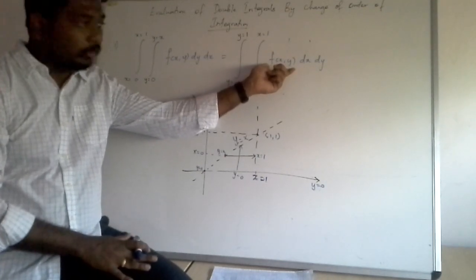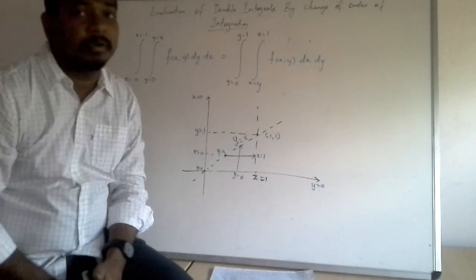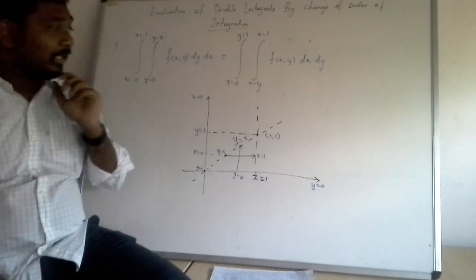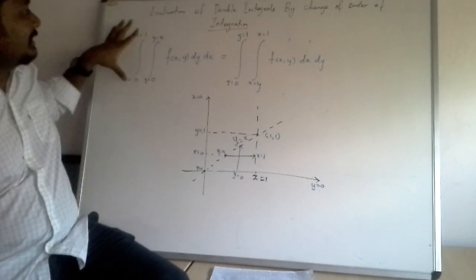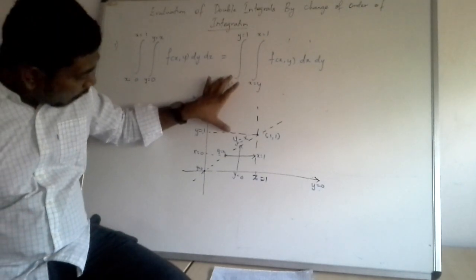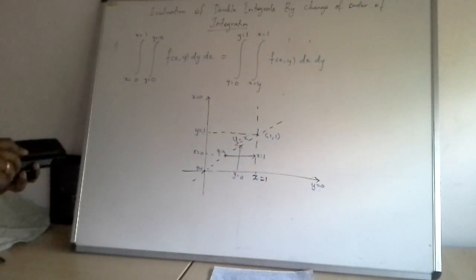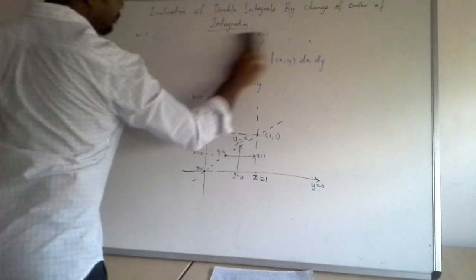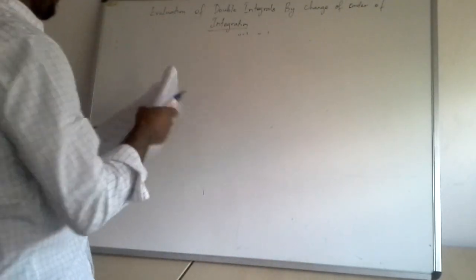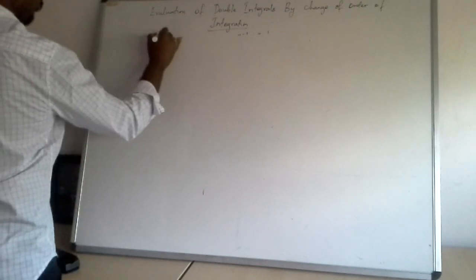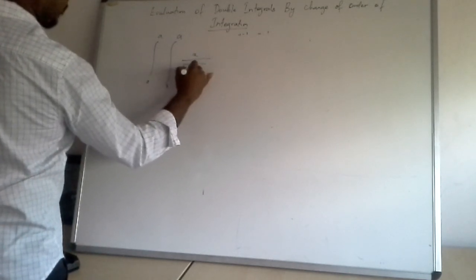Whatever f(x, y) they give you, first integrate with respect to x treating y as a constant, and then integrate with respect to y treating x as a constant. The whole point of change of order of integration is to change dy dx to dx dy — you cannot do it directly, you have to change the limits. I will now take a specific problem: integral of 0 to a, x to a, of x divided by root of x squared plus y squared.